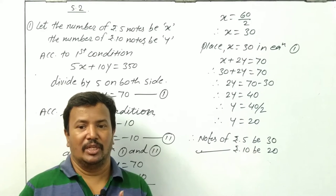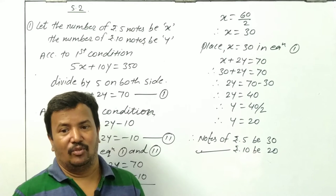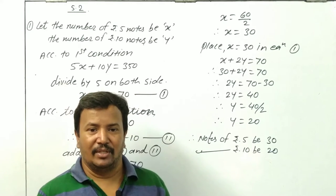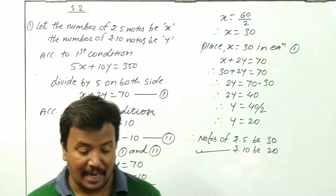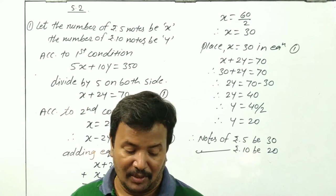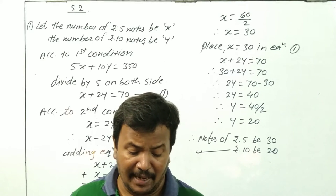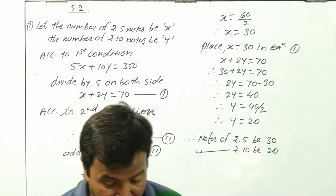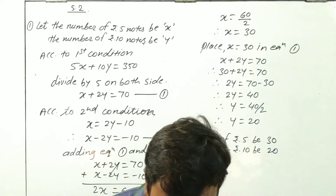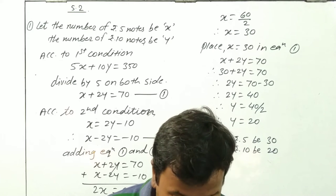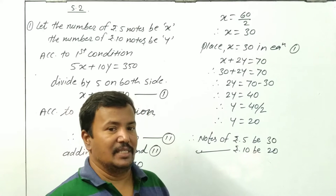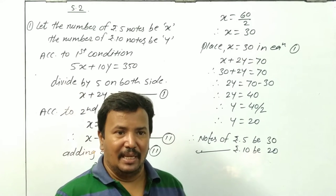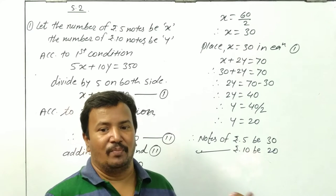Mere paas kuch 5 rupee ke aur kuch 10 rupee ke notes hain. Inko total karoge to amount hoti hai 350. First condition: notes ki amount total karo to 350 rupees. Second condition: number of 5 rupees notes — 10 rupees ke jitne bhi notes hain, unka double karo aur usme se minus 10 karo, to 5 rupees ke notes milenge.